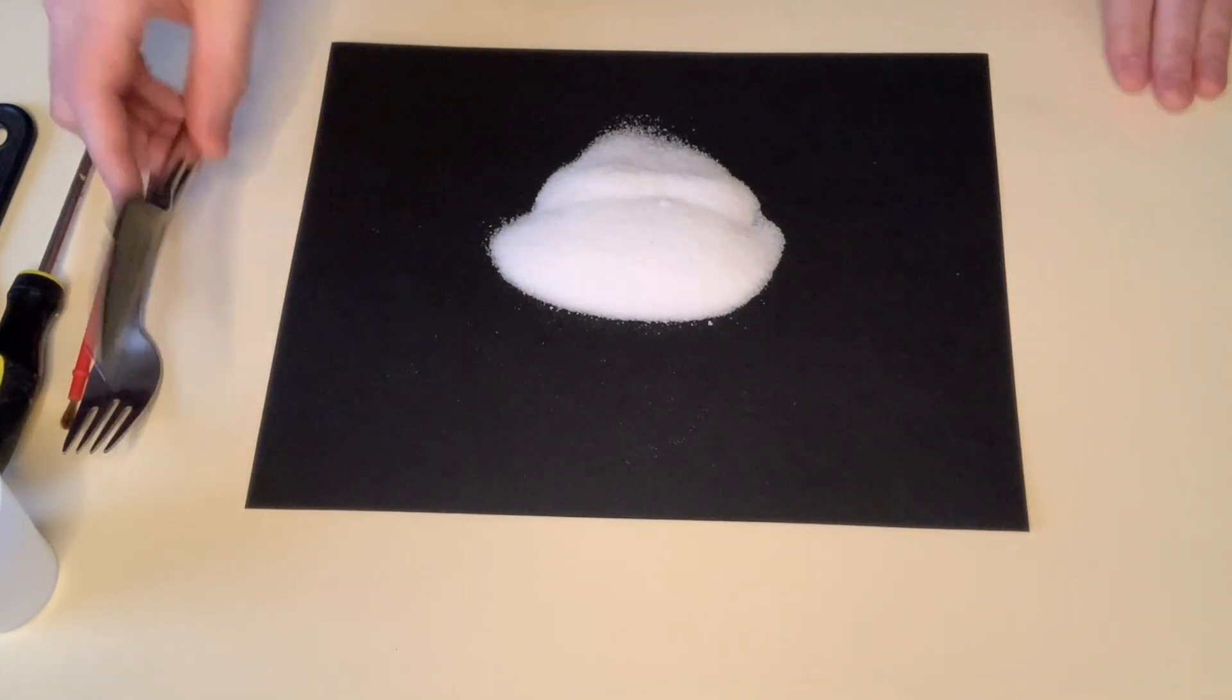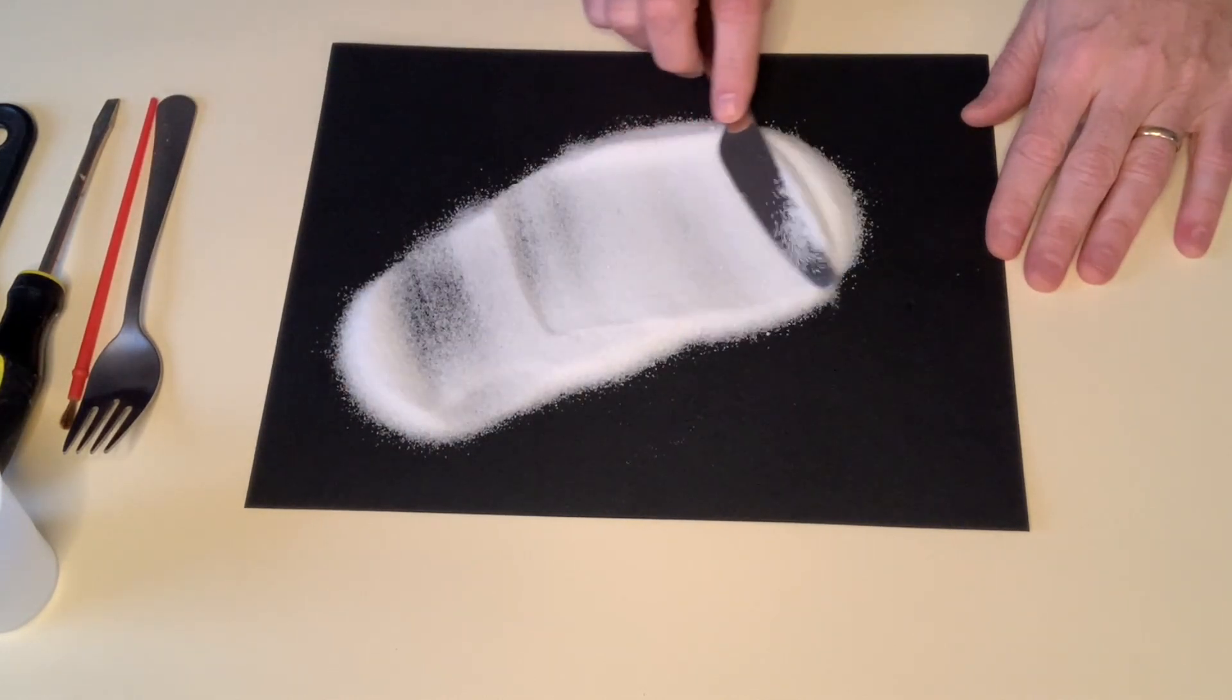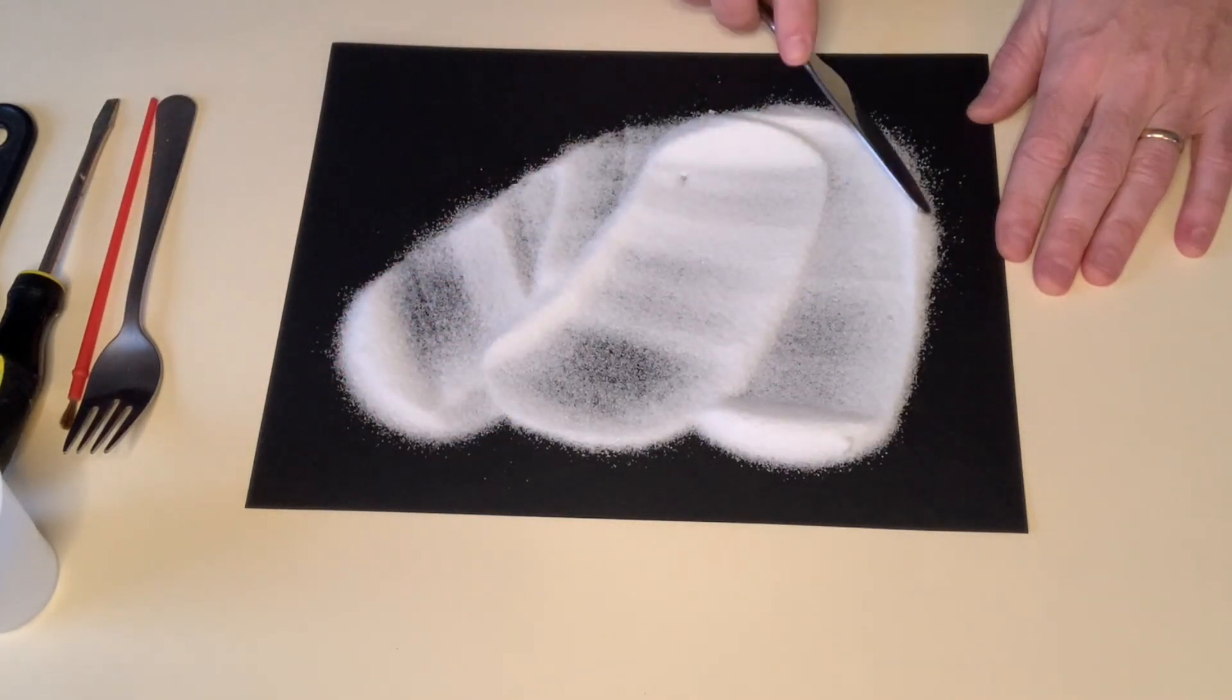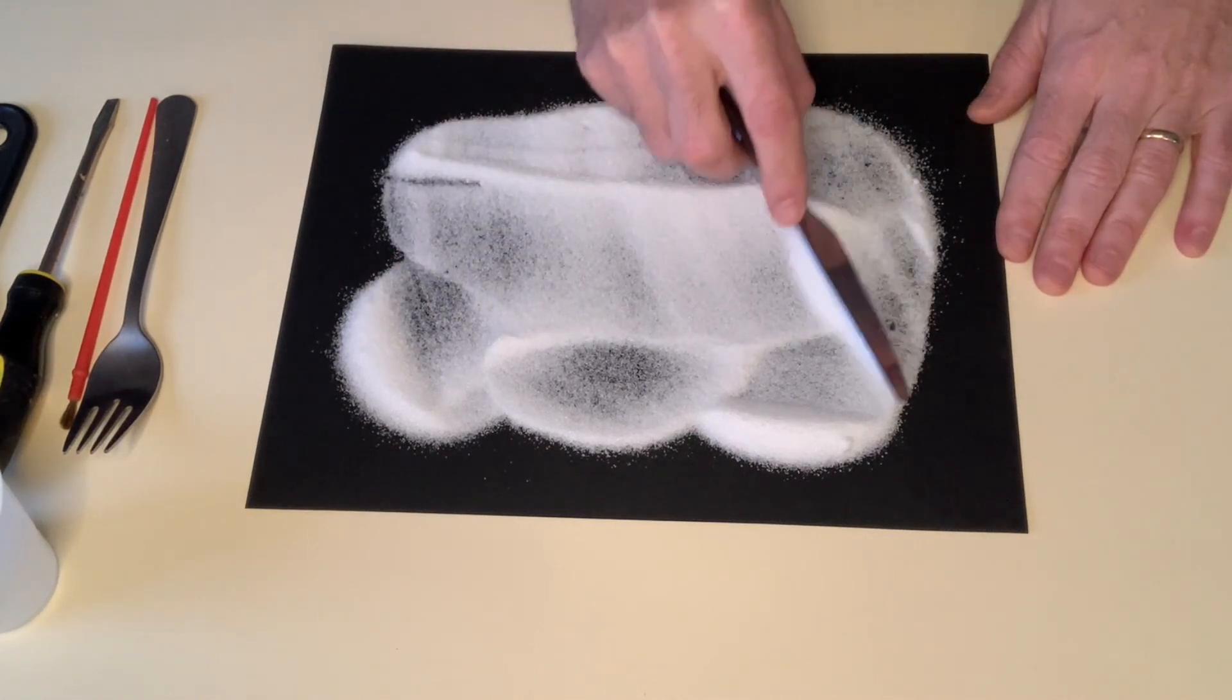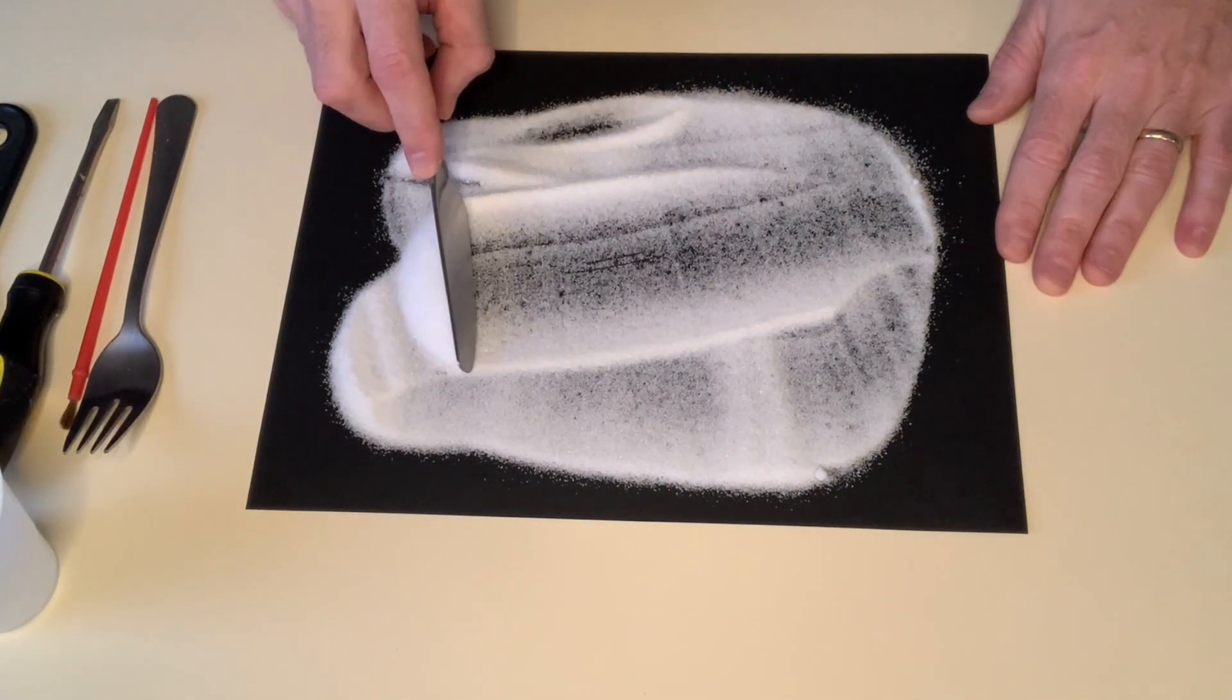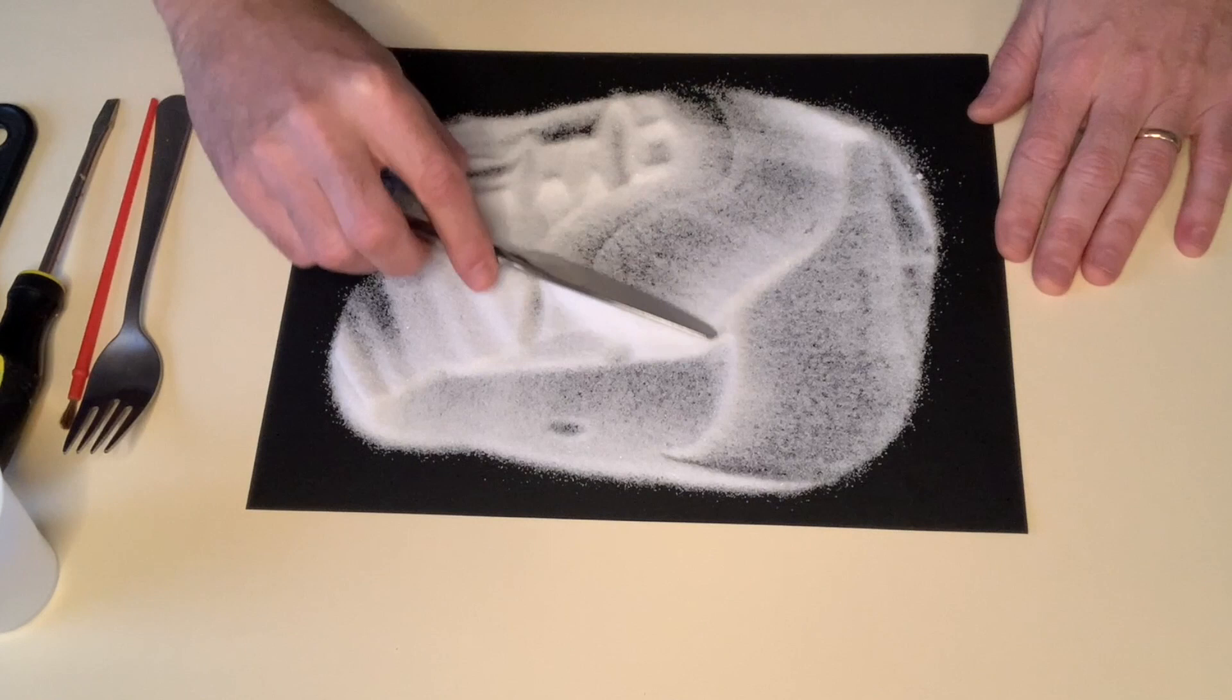Or you could use something like your butter knife to spread it out. And as I'm doing this I see all these different patterns that are showing up. If I press harder, it looks different. And if I press really lightly, I can make swoops.